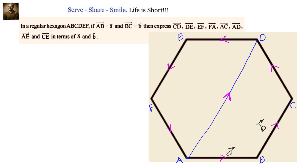Now let us also identify the vectors which are easy to write down. AB vector and ED vector are parallel to each other, same magnitude but in opposite directions. So AB vector is A bar, then ED vector will be minus A bar. Similarly, BC vector is B bar, then EF vector will be minus B bar.